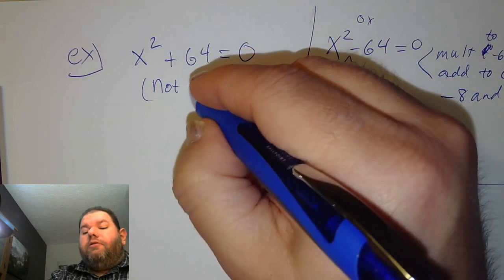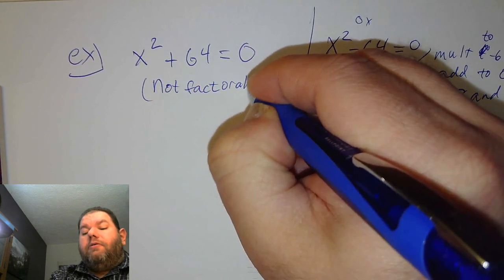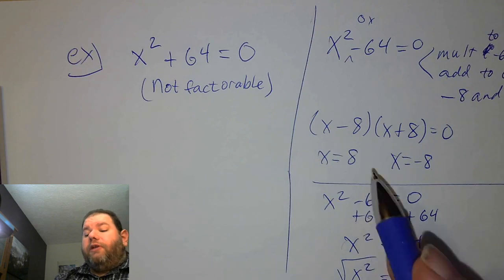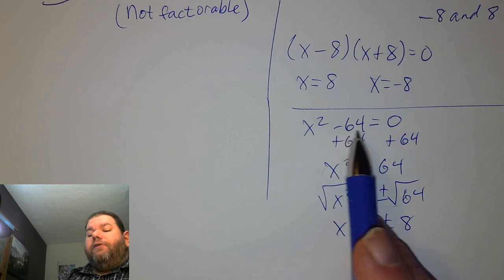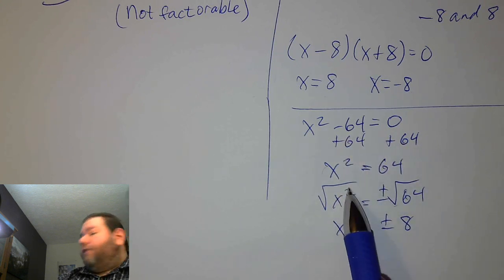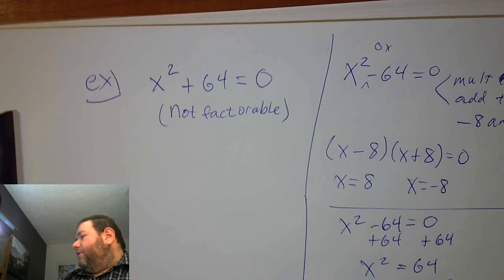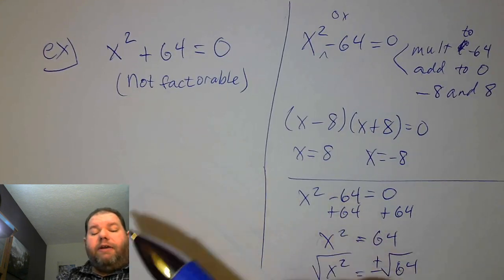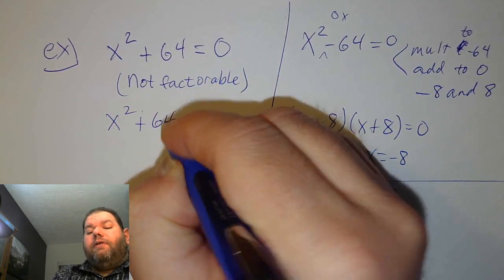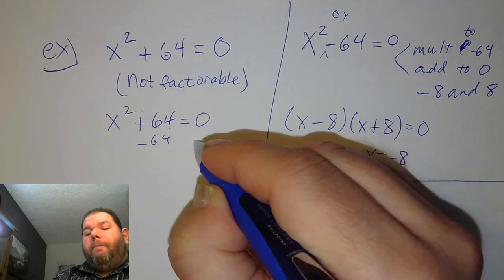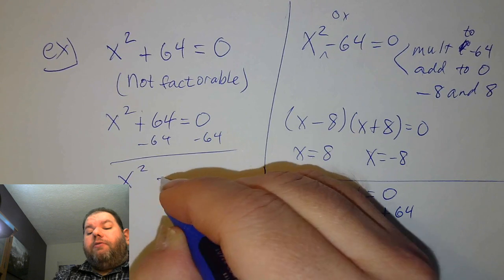Since we can't factor x squared plus 64 equals 0, we'll use the square root property: subtract 64 from both sides so that x squared equals negative 64. Then take the square root of both sides.